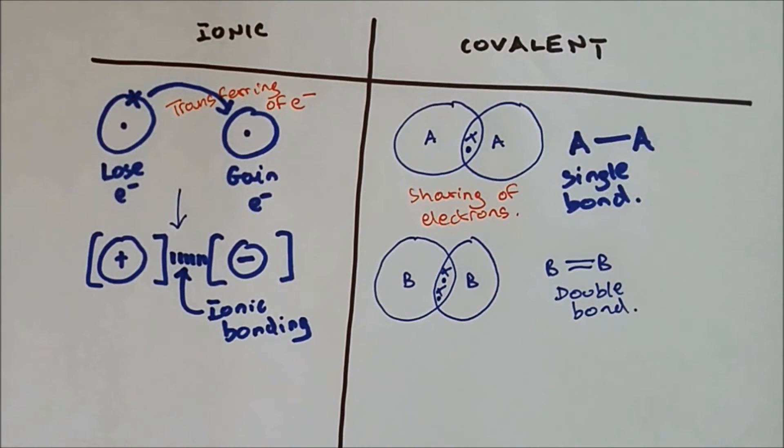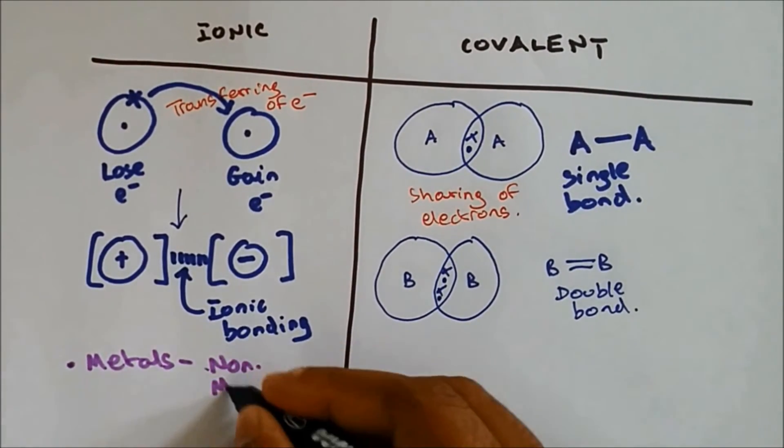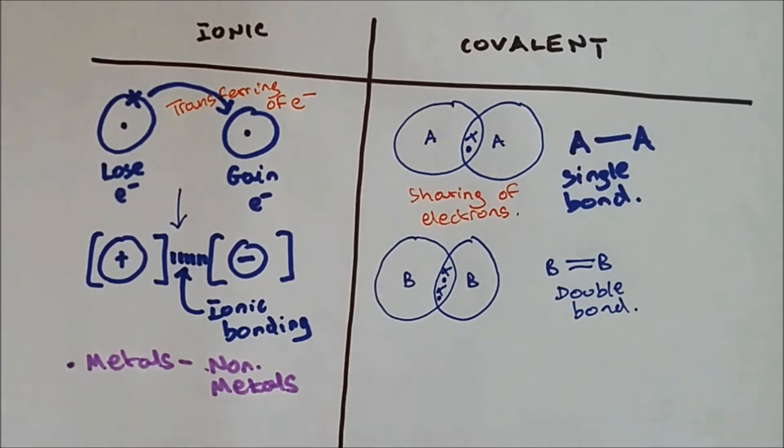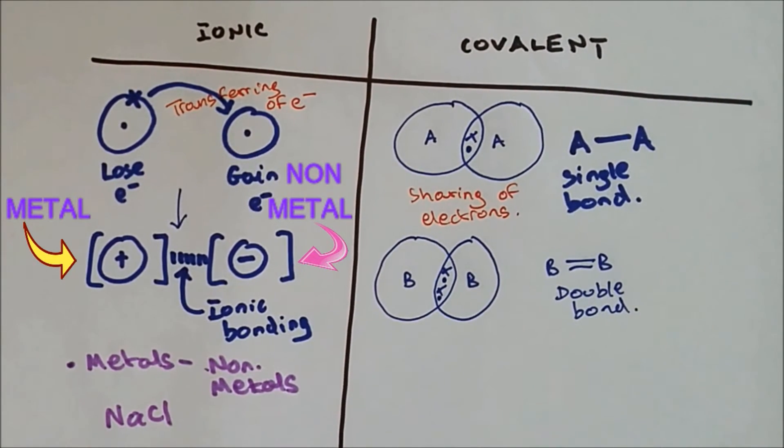When it comes to ionic bonding, metals and non-metals combine together. And the best example of this will be NaCl where Na is a metal and Cl is a non-metal. The Na will lose the electrons and it will be transferred to chlorine. So Na forms positive ion and Cl forms negative ion and they both have attraction.